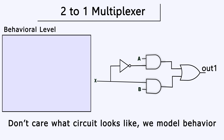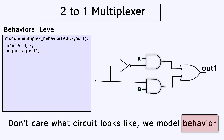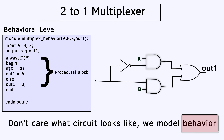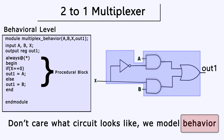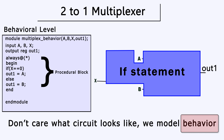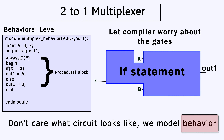The behavioral level is a much higher level of abstraction compared to the gate level and the data flow level. Here we introduce the concept of the procedural block — in this case an always block. 'Always @*' means the code enclosed within that always block will execute any time any of the signals change. Behavioral level Verilog describes the behavior of the circuit rather than what the circuit actually is, which is a big advantage for complex designs. We leave the task of finding the actual logic gates to the compiler.